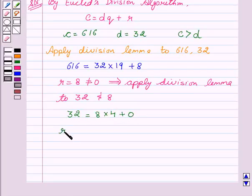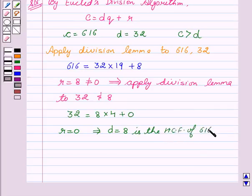Here we see that R equal to 0. So, this implies D equal to 8 is the HCF of 616 and 32.